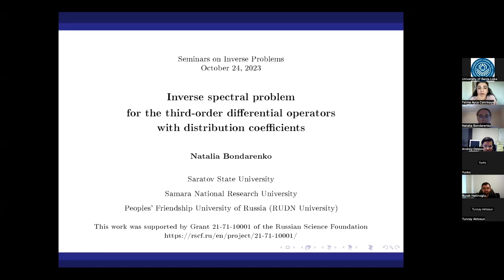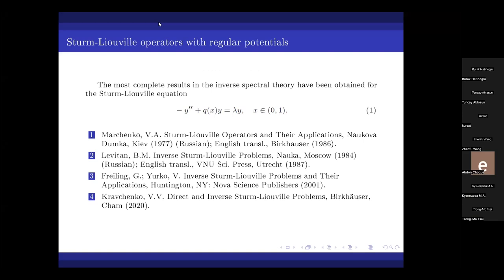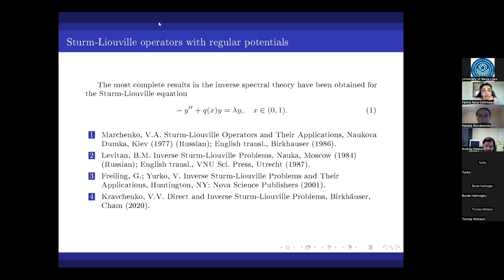The talk is about an inverse spectral problem for the third-order operator. But before talking about third-order operators, I'd like to recall some well-known results for the Sturm-Liouville operator. The most complete results in the inverse spectral theory have been obtained for the Sturm-Liouville equation. This is the second-order linear differential equation, where Q is usually called the potential and lambda is a spectral parameter. This equation is considered on a finite interval with some boundary conditions, or on the line or half-line.